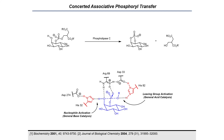One example of a concerted associative phosphoryl transfer reaction in a biochemical context is the substitution reaction at the phosphorus-5 center of a phosphorylated sugar facilitated by a catalytic dyad in phospholipase C, in which the leaving group and the nucleophile are activated simultaneously by the enzyme. The diacylglycerol leaving group is activated via a hydrogen bonding interaction with the enzyme's protonated histidine residue HIS82, inducing PO bond cleavage, while the hydroxyl nucleophile is concurrently activated via a basic histidine residue, HIS32, inducing PO bond formation.